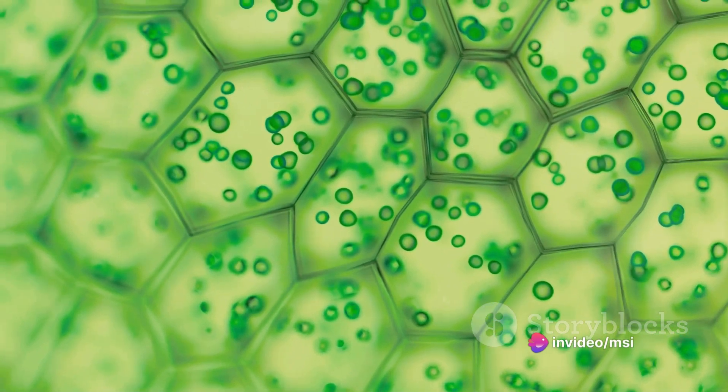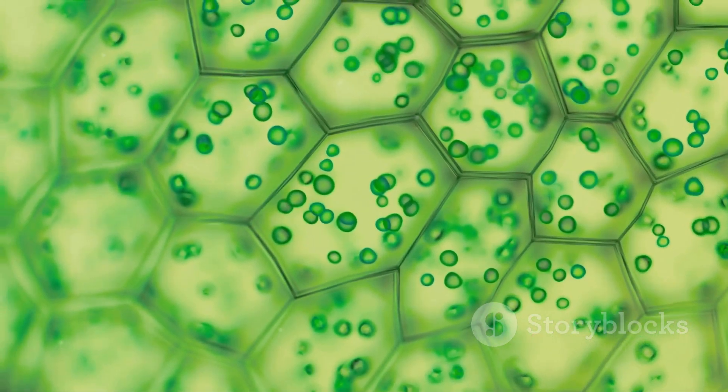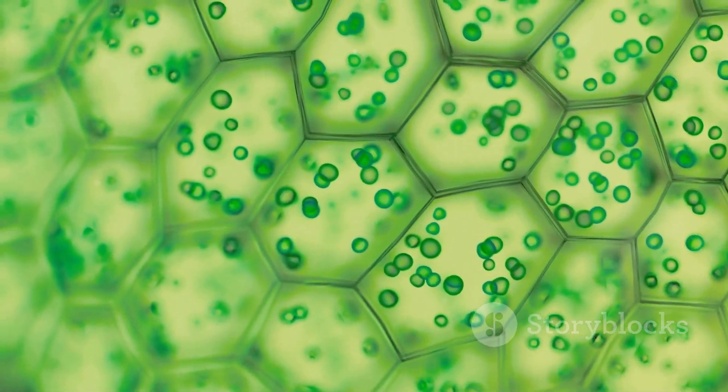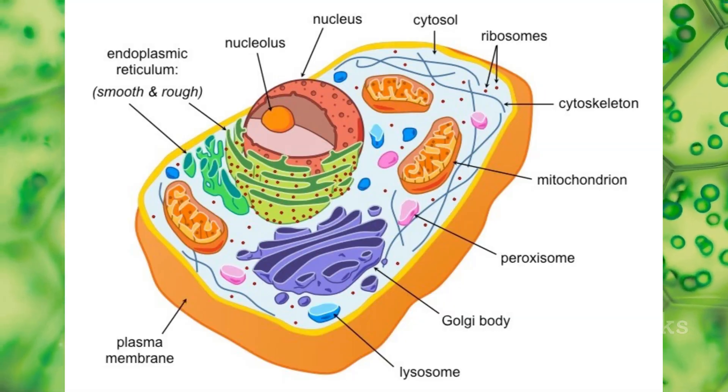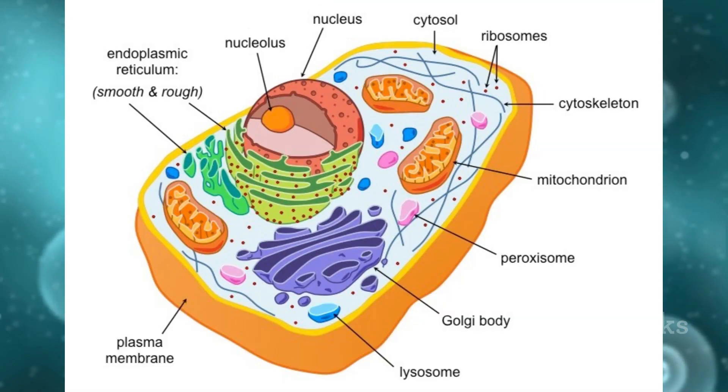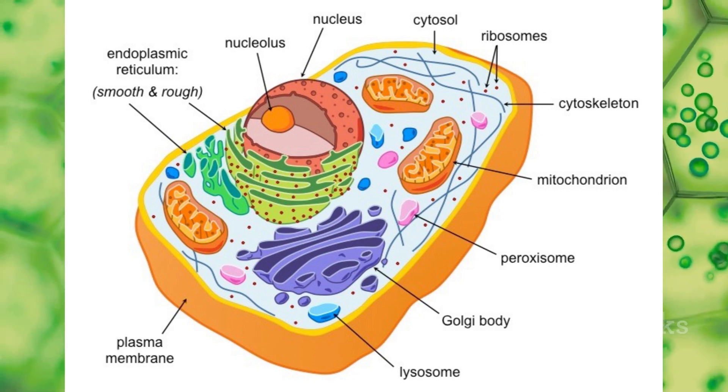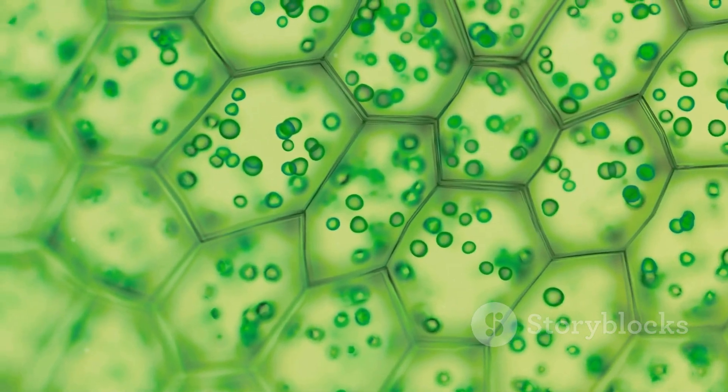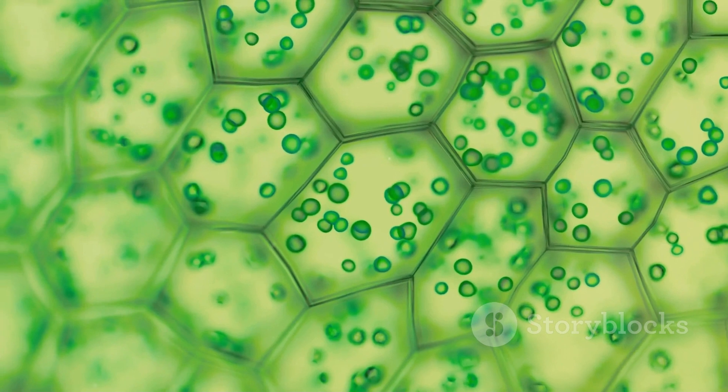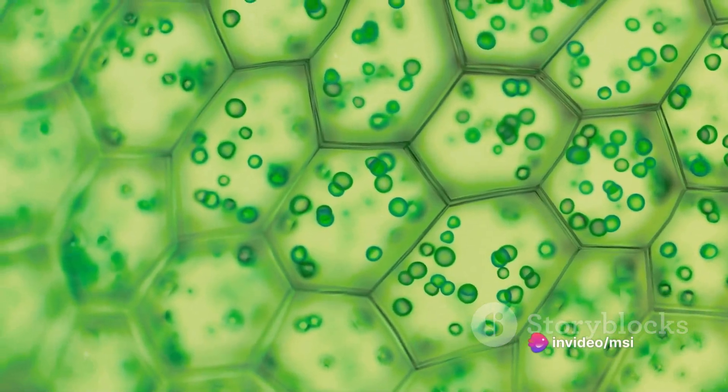Eukaryotic cells are like a bustling metropolitan city, with a wide variety of specialised organelles, each performing a dedicated function. Powerhouses for energy production, a sorting and packaging centre, waste disposal units, and an endoplasmic reticulum for protein synthesis and transport. Some eukaryotic cells, like those in plants, even have chloroplasts for capturing sunlight and converting it into energy.